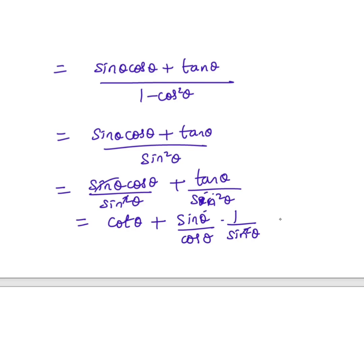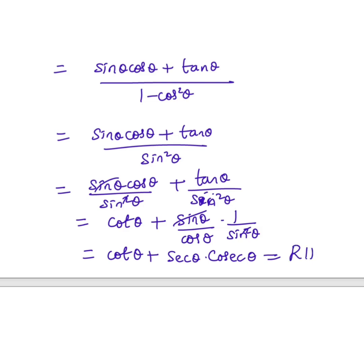After cancellation, we get cos θ plus 1/cos θ is sec θ and 1/sin θ is cosec θ. This is exactly our RHS, and hence it is proved.